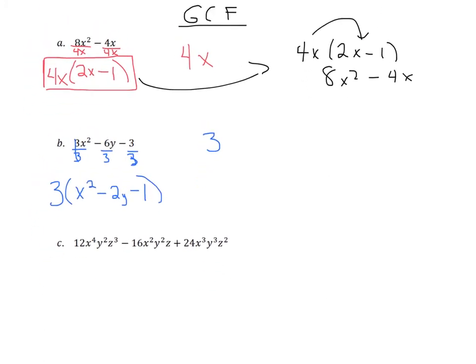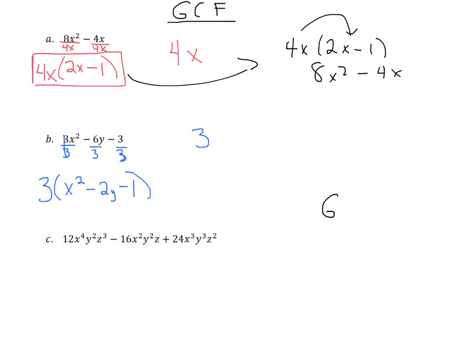We've got a lot more going on in this one, but let's first figure out what the GCF would be. We've got a 12, a 16, and a 24. 2 could go into all of these, but we can go bigger. 6 doesn't divide into 16, so that won't work. The GCF — the number that divides into all of these — is going to be 4. Now for the variables: we have x to the 4th, x squared, and x to the 3rd. X squared is the smallest they all have in common, so we take out x squared. For the y's, we have y squared, y squared, and y to the 3rd — so we take out y squared.